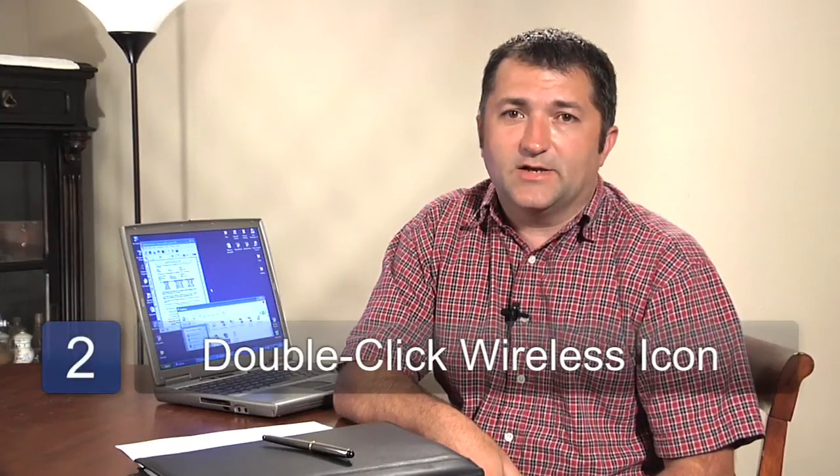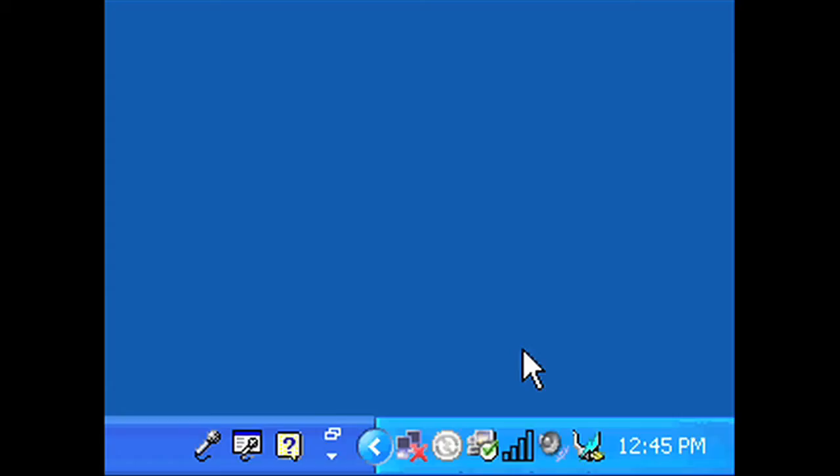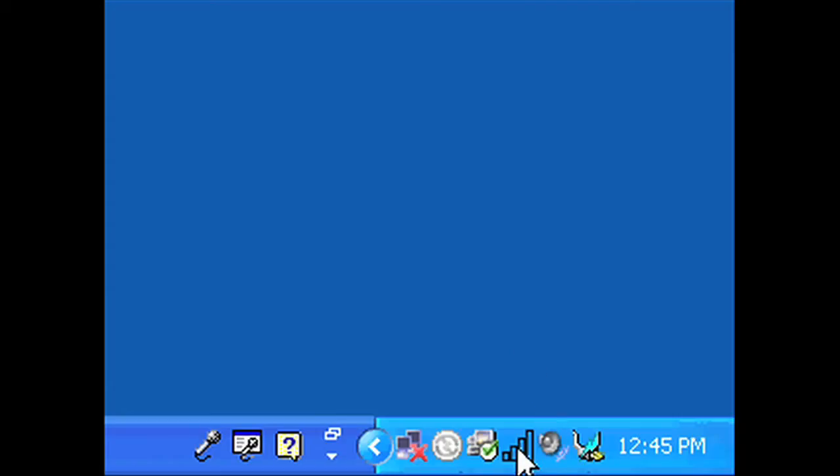Once you've turned your radio on, a wireless network connection icon should appear in the icon tray on your Windows desktop. By double-clicking this icon, it'll open a wireless network configuration page.